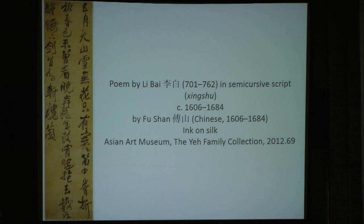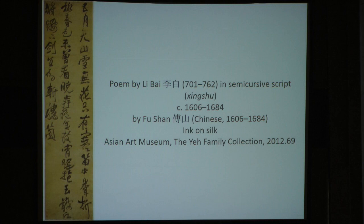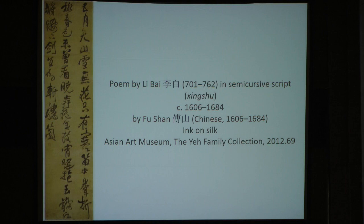Here's Fushan, choosing to do Li Bai — choosing a particular poem and a particular way of rendering it in semi-cursive script. Li Bai was known for his untrammeledness, his love of drink and the like. There's a kind of freedom that Fushan is perhaps trying to express. As far as we know, we don't have any works attributed to Li Bai himself, so Fushan is not emulating his calligraphic style but rather emulating a spirit of this person — a kind of communion being created here.